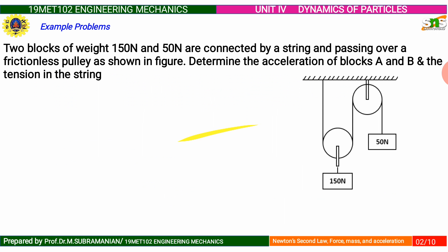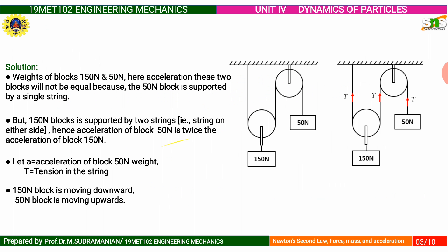Apply D'Alembert's Principle: summation of forces in y direction equal to zero, taking upward direction as positive. From the free body diagram: T minus 50 minus mass into acceleration equal to zero. Substituting the mass value for the 50 Newton block, we form Equation 1: T minus 5.097 into acceleration equal to 50.